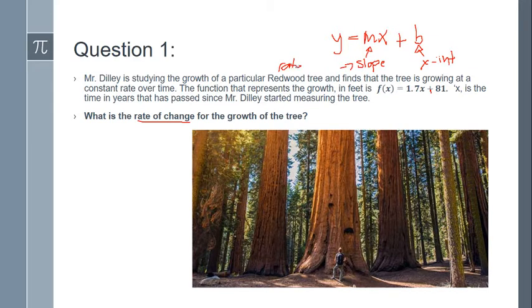So make sure you ingrain that in your head, right? Whenever we have a slope, it is talking about some kind of rate of change of something. Alright, so what is the rate of change for the growth of the tree? Well, here it is. No math to do. Just pointing to it. It's the coefficient for x, 1.7. That easy.